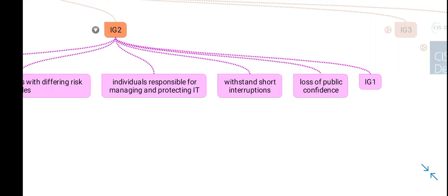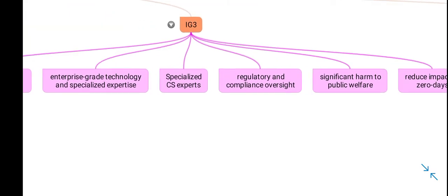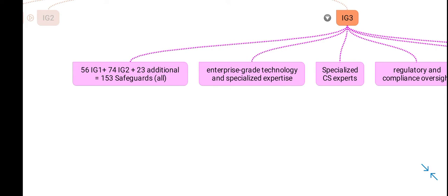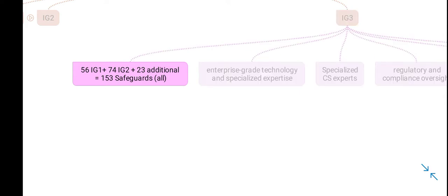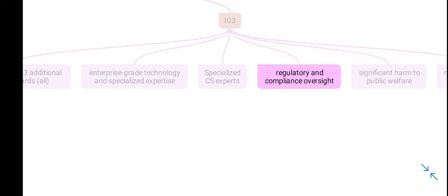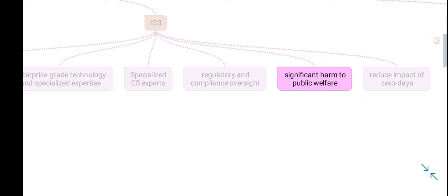In implementation group 3, it is for organizations with larger size and with a lot of stakes. Implementation group 3 includes all the previous controls of IG1 and IG2 and also 23 additional controls, so a total of all 153 safeguards are included in implementation group 3. This organization has enterprise-level security and specialized cyber security experts. It is also subjected to regulatory and compliance oversight, and any interruption of IT service would cause harm to public welfare — so the stakes are high. Therefore, you have to implement all the controls of this document, and by implementing all the controls we can reduce the impact of zero-days.